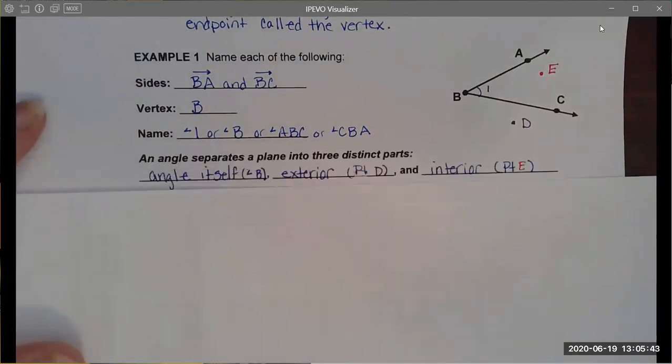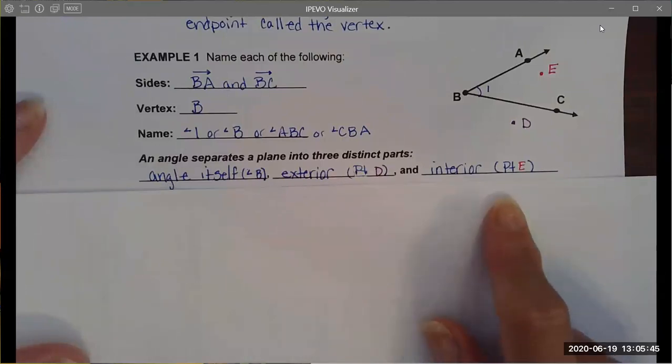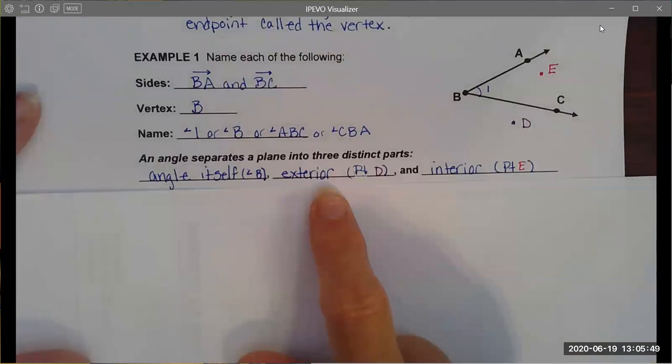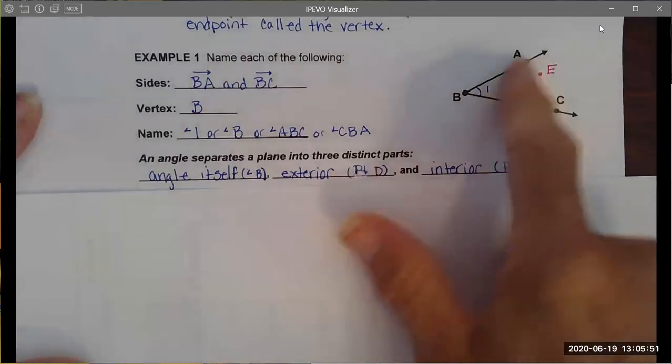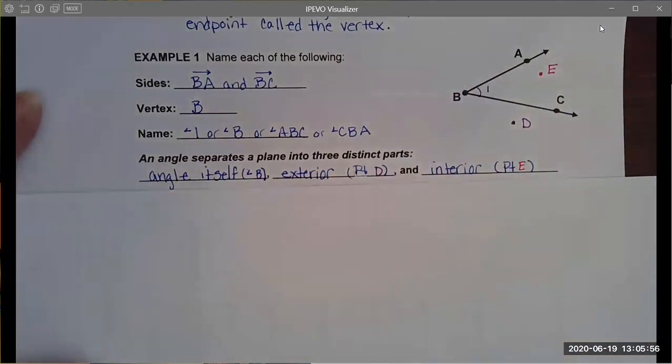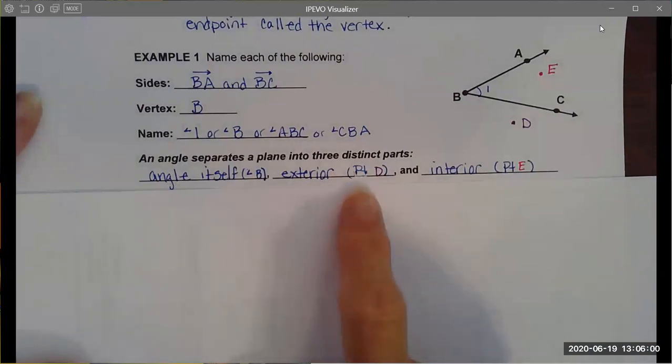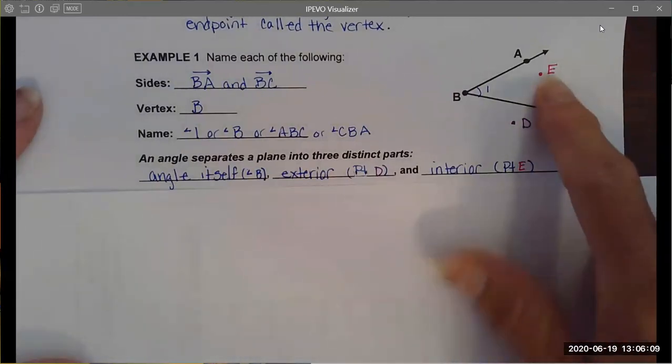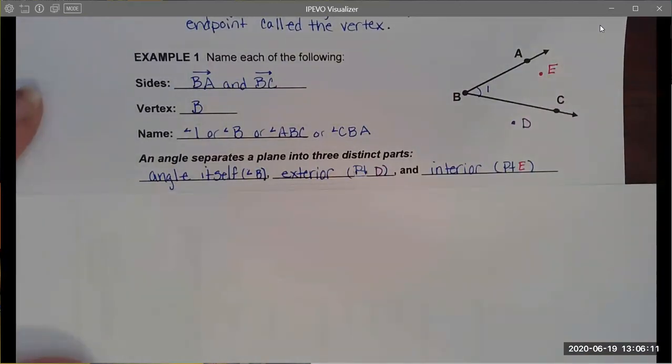I also wanted to point out some vocabulary. We have the angle itself, the exterior - any points that are not on the line and are not inside the walls of the angle are considered exterior points. Point D is an exterior point. An angle also brings the plane into an interior part, and point E would be a point on the interior.